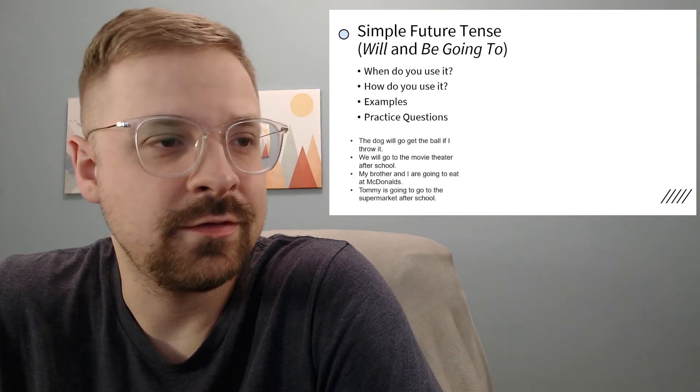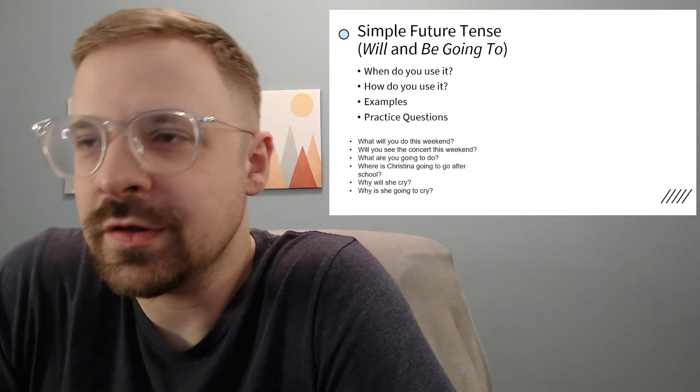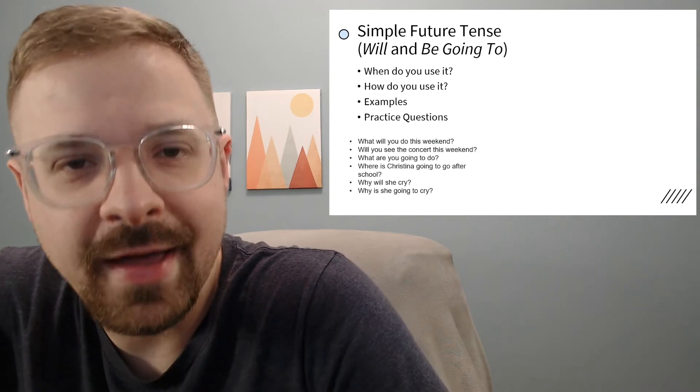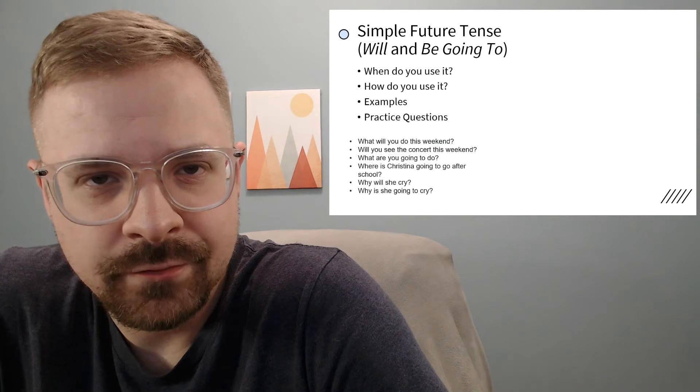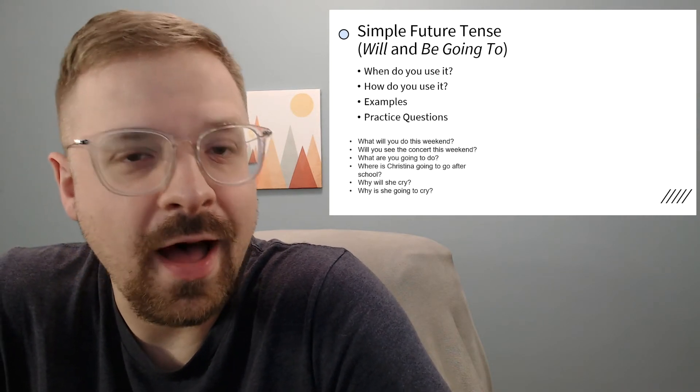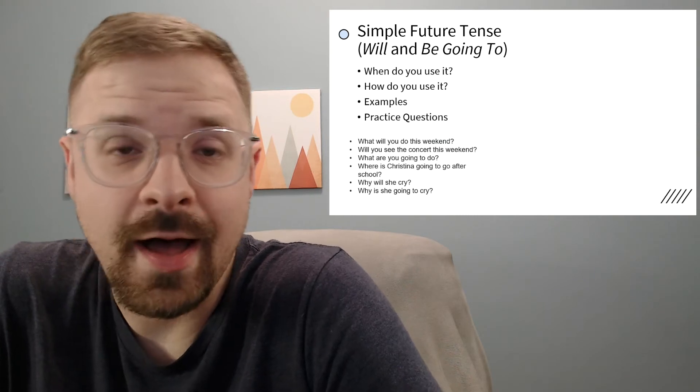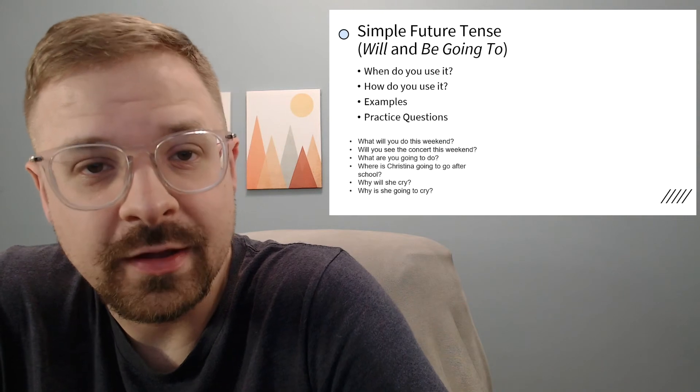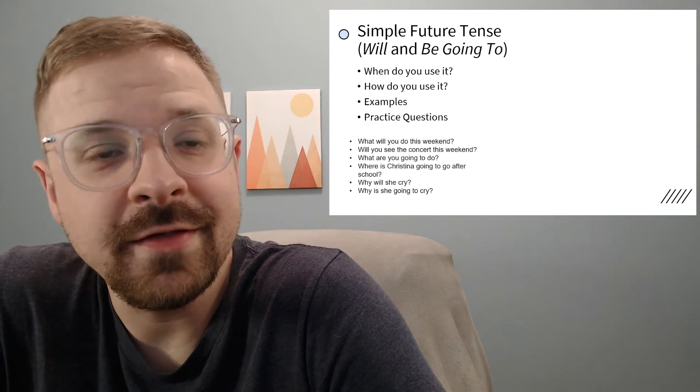Let's take a look at some practice questions and get a little more practice ourselves. Look at the first one: what will you do this weekend? Whenever someone asks 'what will you do,' you can say 'I will' - that's the first thing you'll say - and then the verb or action you're going to do. I will see my mom this weekend. I will go to the movie theater this weekend. I will read a book this weekend.